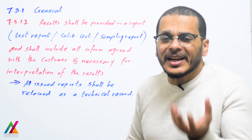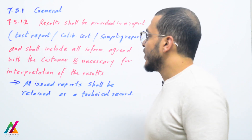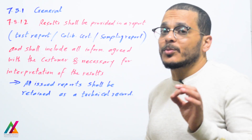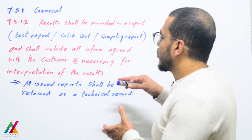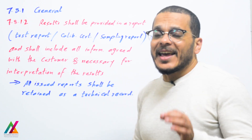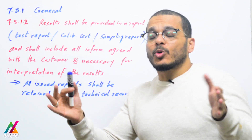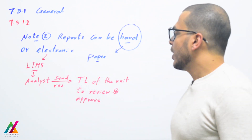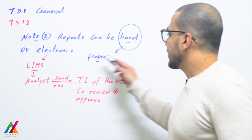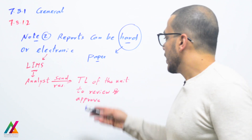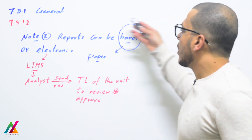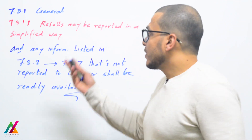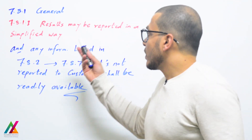The report shall be simple and clear for the customer to facilitate easy interpretation of results, and shall include all information agreed with the customer and necessary for interpretation. All issued reports shall be retained as technical records, so the final report is a technical record. Reports can be hard copy or electronic — if you have a LIMS inside the lab, the analyst will send the result to the technical lead through the LIMS for review and approval. Paper documents are still recognized in this edition.